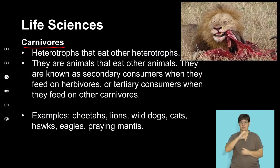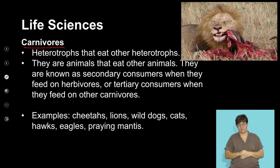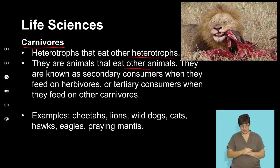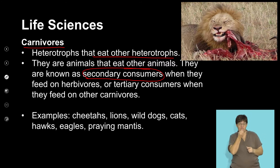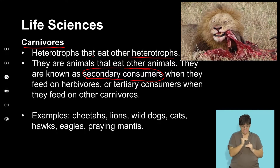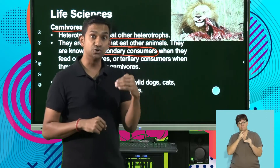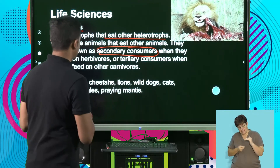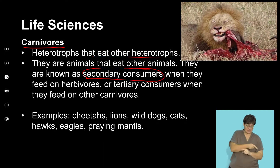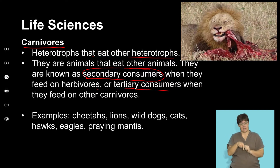The next group mentioned earlier are called carnivores. Carnivores are your group of heterotrophs that consume meat — heterotrophs that eat other heterotrophs. They are animals that eat other animals, known as secondary consumers. In terms of organization in the food chain: autotrophs are primary producers, primary consumers are above them, and then secondary consumers are consuming your primary consumers. So they feed on the primary consumers, and when they feed on herbivores or tertiary consumers, they are called carnivores.